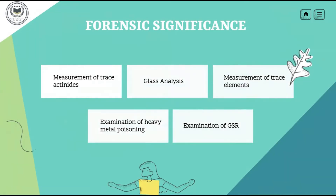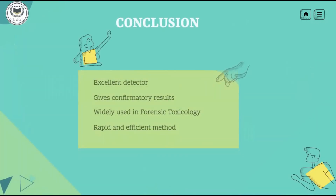Depending on the specific parameters unique to each patient's diagnostic plan, samples collected for analysis can range from whole blood, urine, plasma, and serum, to even packed red blood cells. Another significance of ICP-MS is that it is also used to examine gunshot residues, which are collected from the hands, clothes, and firearms, to detect and examine the composition of the GSR for further matching and finding the type of GSR used.